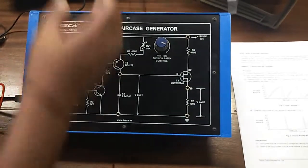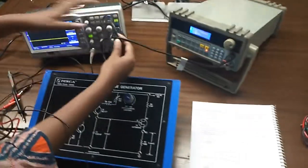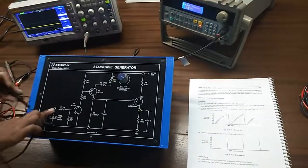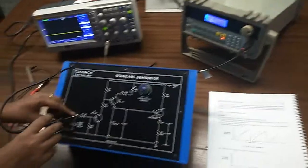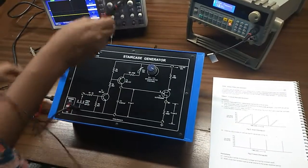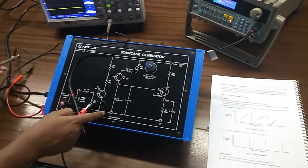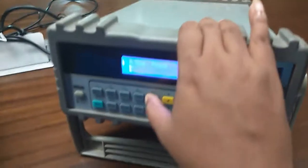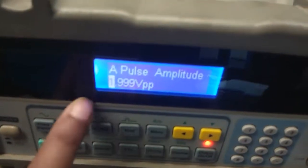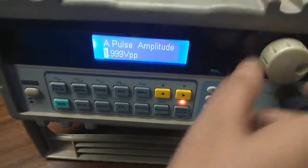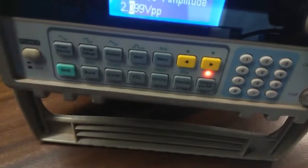I have connected the ground connection and I am giving input here. And I will see the output here across C1. We need to give a pulse frequency of 1 kilohertz and the voltage should be 2 volts.